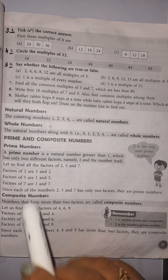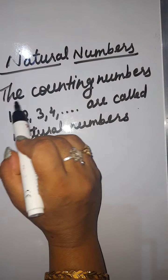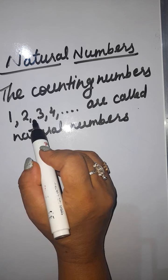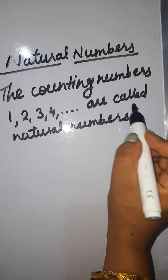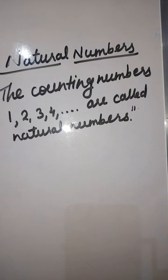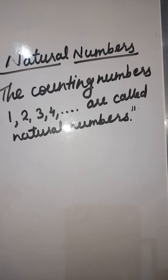What are natural numbers? The counting numbers 1, 2, 3, 4 and so on are called natural numbers. Natural means nature — when you look around and start counting things you can see, like trees or houses, you count 1, 2, 3, 4. These are counting numbers.